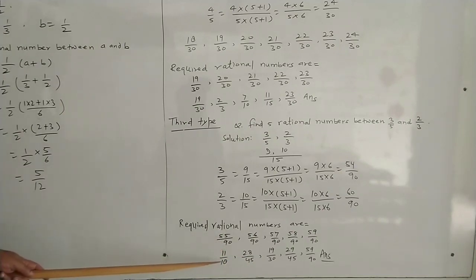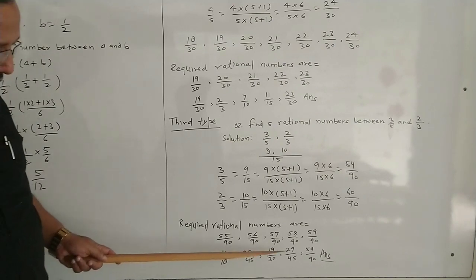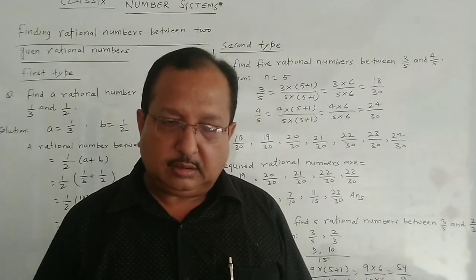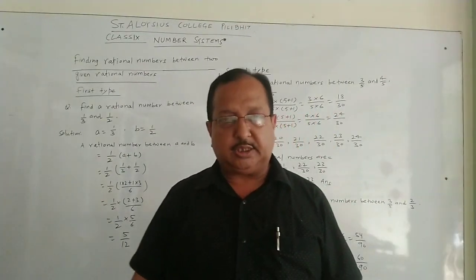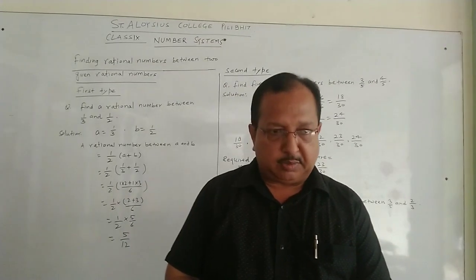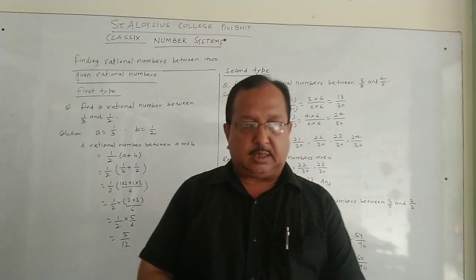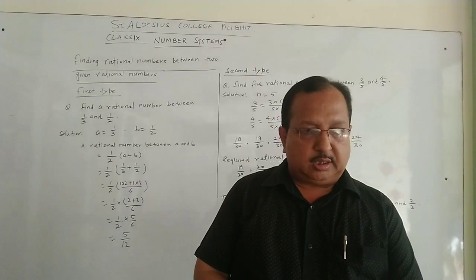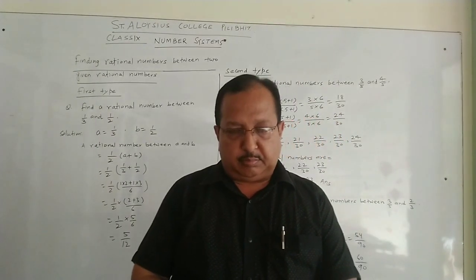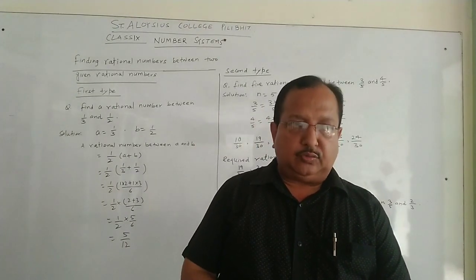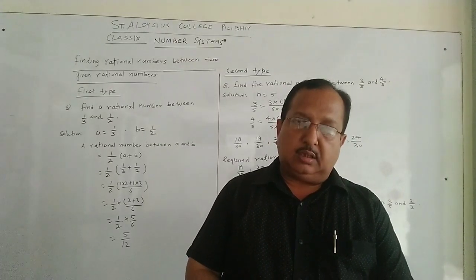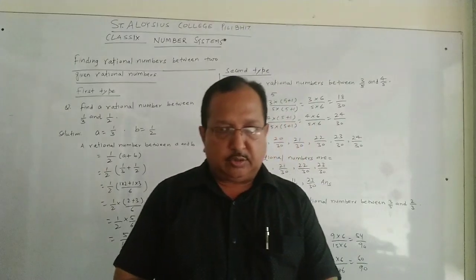On simplifying, we get 11/18, 28/45, 19/30, 29/45, and 59/90. So that's all for today. We will continue your studies this way on a regular basis. Complete the worksheet, and you can check your homework when you come to school. Stay at home. Be safe.